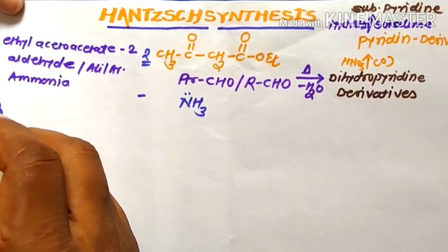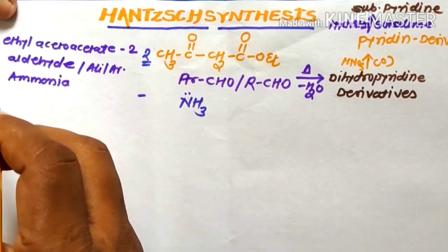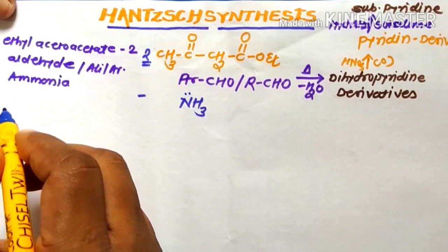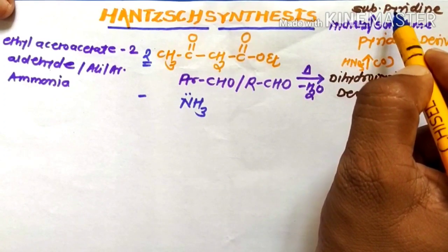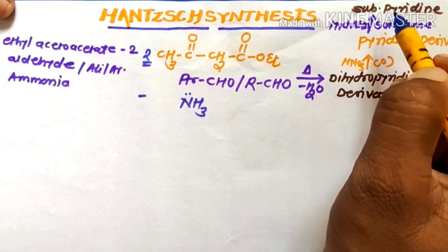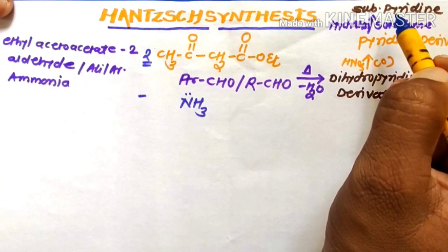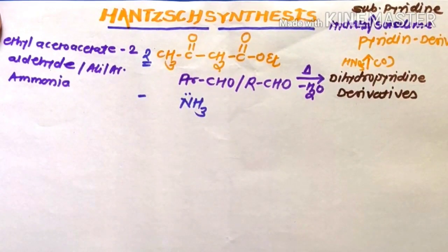Now we will discuss the actual mechanism of the reaction — how the 4 components react with each other to form the final product. The mechanism involves 3 steps.